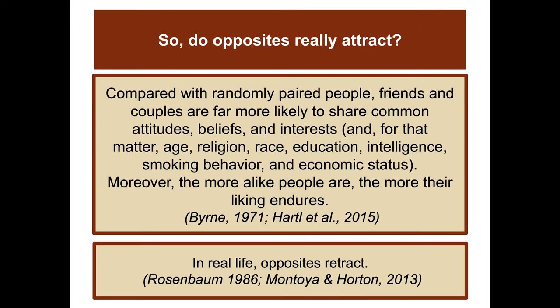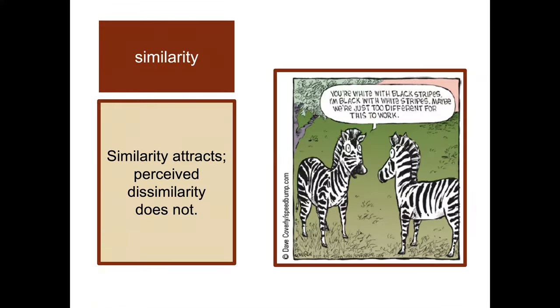Is 'opposites attract' true? Compared with randomly paired people, friends and couples are far more likely to share common attitudes, beliefs, and interests — and even age, religion, race, education, intelligence, smoking behavior, and economic status. Moreover, the more alike people are, the more their liking endures over time. In real life, opposites don't attract — similarity attracts.